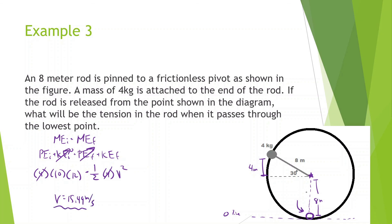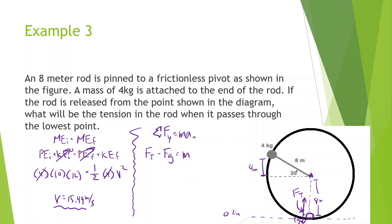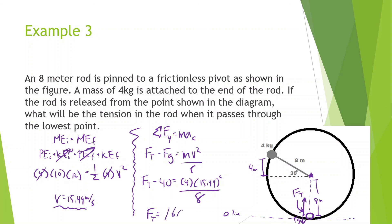However, we're not looking for the speed — we're looking for the force of tension. There's a force of gravity going down and a force of tension going up. We apply uniform circular motion here. Net force toward the center equals mass times centripetal acceleration: tension minus gravity equals M times V squared over R. Force of tension minus 40 equals 4 times 15.49 squared divided by 8. Solving: 15.49 squared times 4, divided by 8, plus 40 gives us a tension of 160 newtons.